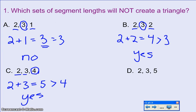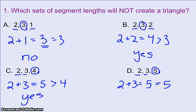So then lastly, the last example is D. I have segment lengths of 2, 3, and 5. I add up the two smaller ones. 2 plus 3 is 5. I need to compare that with my longest side, and in this case they're equal. So I do not have a triangle.